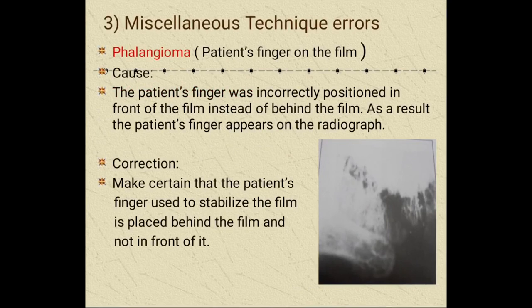Moving to miscellaneous technique errors: phalangioma refers to the patient's finger appearing on the film. The cause is the patient's finger being incorrectly positioned in front of the film instead of behind it. As a result, the patient's finger appears on the radiograph. Make certain that the patient's finger used to stabilize the film is placed behind the film and not in front of it.